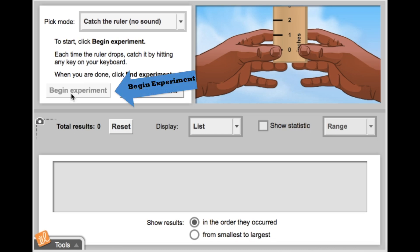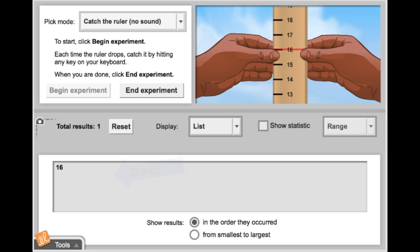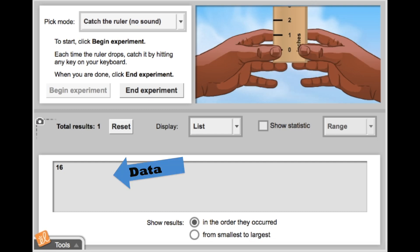Once I click the Begin Experiment button, I will watch intently as the ruler drops and click any key on my keyboard to catch it. Oops, I missed that one. I'll try again and try to be faster this time. As I catch the ruler, my data is being recorded below as a list.